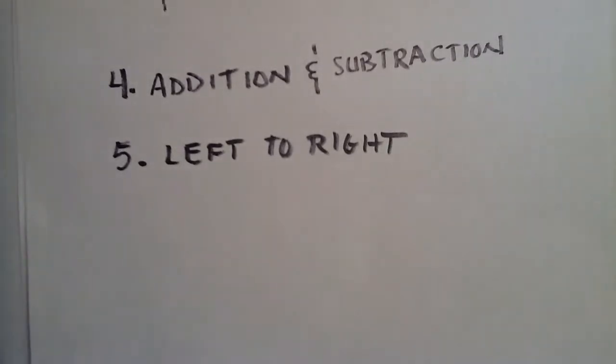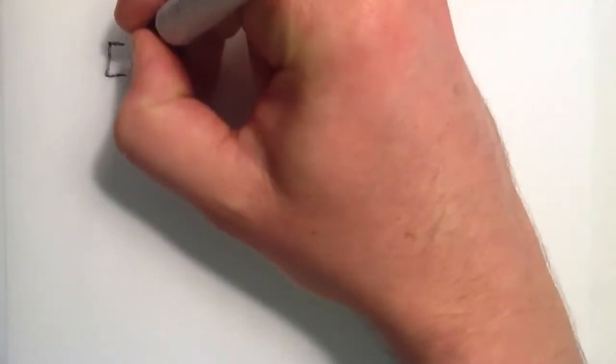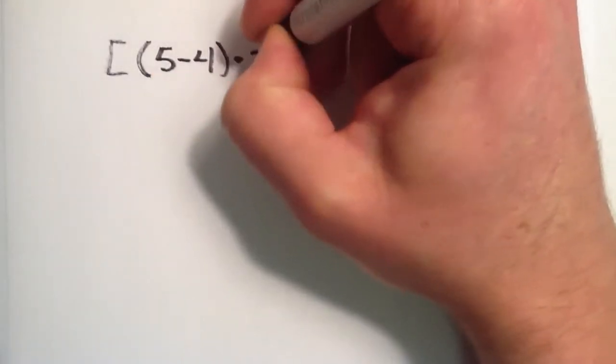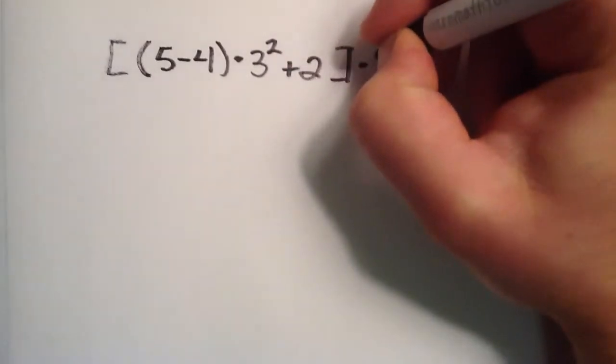So let's just go ahead and jump into a few examples here. Let's say that we have braces, and inside we have parentheses, 5 minus 4 times 3 squared plus 2, close braces, times 6.